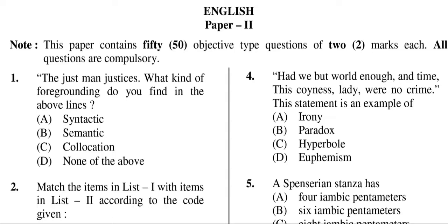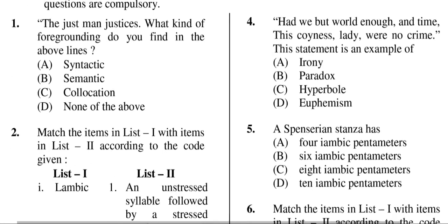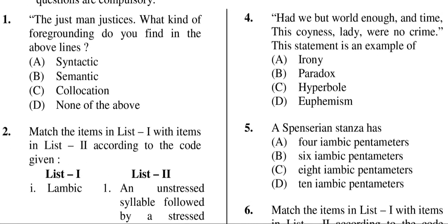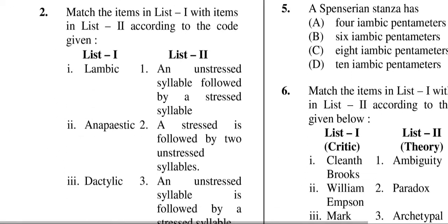The first question is: 'The just man justices' — what kind of foregrounding do you find in the above lines? The correct answer, according to my research, is A and B both — that is syntactic and semantic foregrounding. Please do your own research to verify.